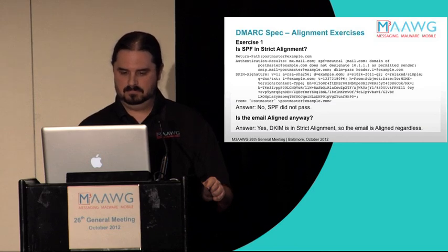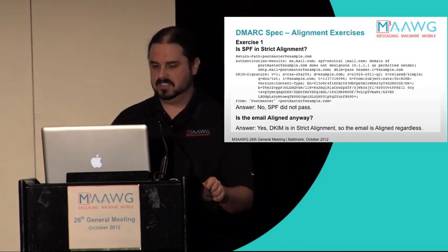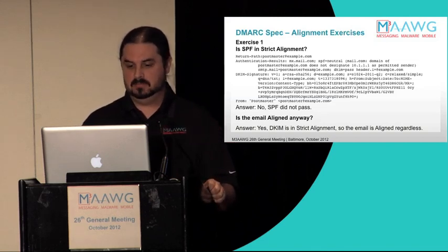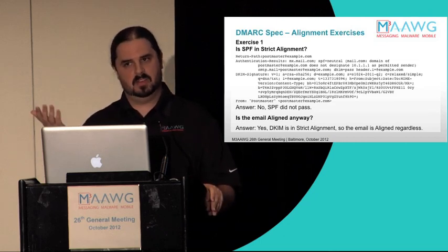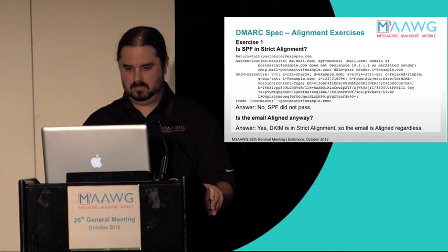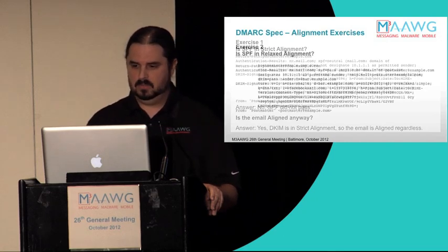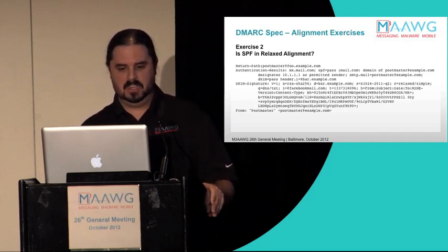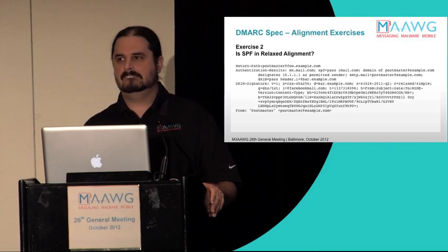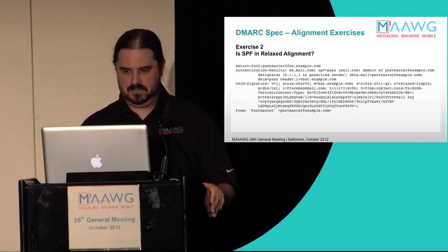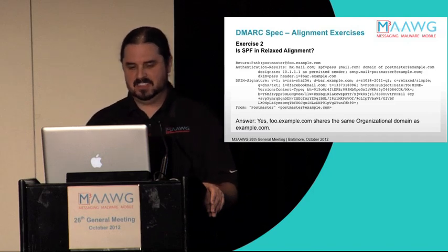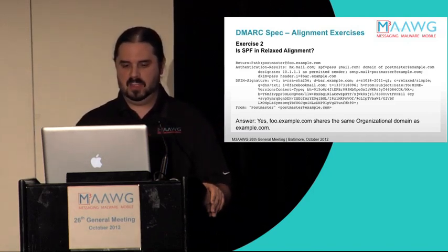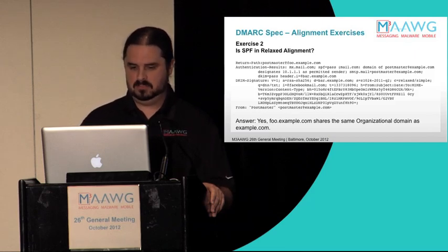So is the email aligned anyway? SPF is out of alignment, but DKIM is in alignment because it passed for the same domain example.com according to the authentication results header. So even though SPF failed, the email is still in alignment because it is DKIM-signed. Next exercise: is SPF in relaxed alignment? The answer is yes — foo.example.com shares the same organizational domain as example.com, and SPF passed. Therefore the email is in relaxed alignment.